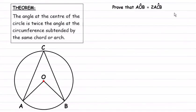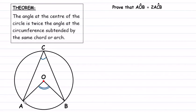Hey guys and welcome to this video. In this video we're going to prove a circle theorem that states that the angle at the center of the circle is twice the angle at the circumference, subtended by the same chord or arc. So the angle at the center is twice the size of the angle at the circumference because they're being supported by the same arc — or it can also be supported by a chord.